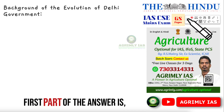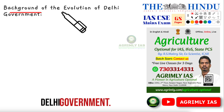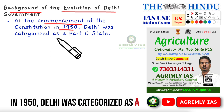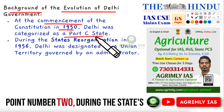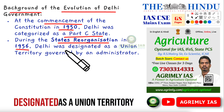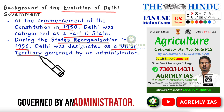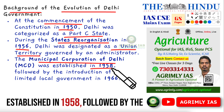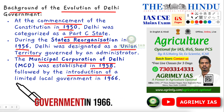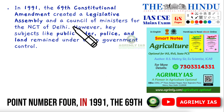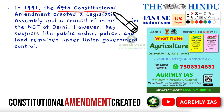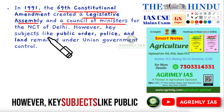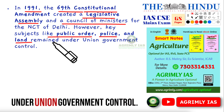Answer. The first part of the answer is the background of the evolution of Delhi Government. Point one: At the commencement of the Constitution in 1950, Delhi was categorized as a Part C state. Point two: During the states' reorganization in 1956, Delhi was designated as a Union Territory governed by an administrator. Point three: The Municipal Corporation of Delhi (MCD) was established in 1958, followed by the introduction of a limited local government in 1966. Point four: In 1991, the 69th Constitutional Amendment created a Legislative Assembly and a Council of Ministers for the NCT of Delhi. However, key subjects like public order, police, and land remained under Union Government control.